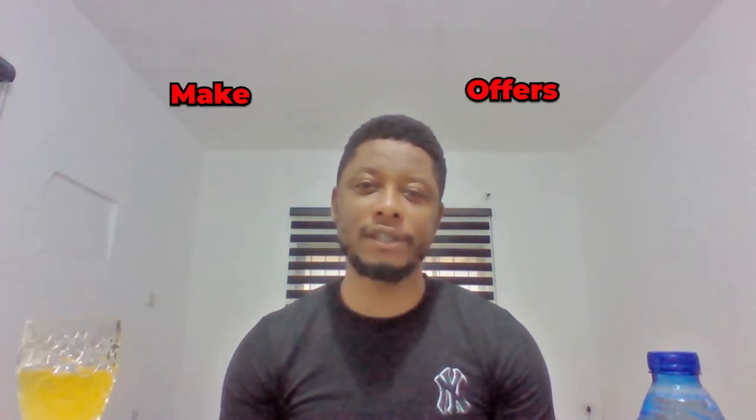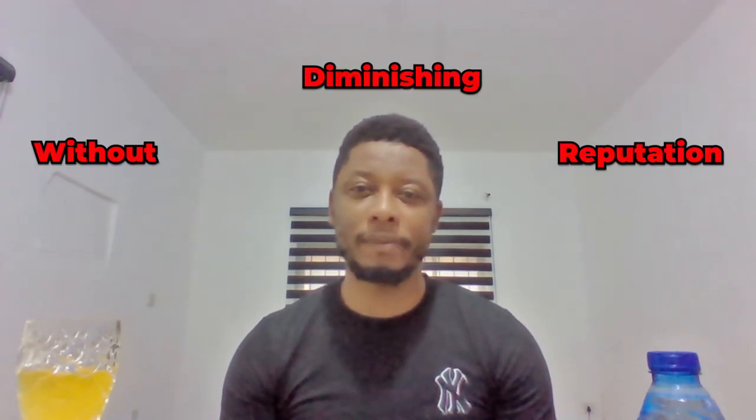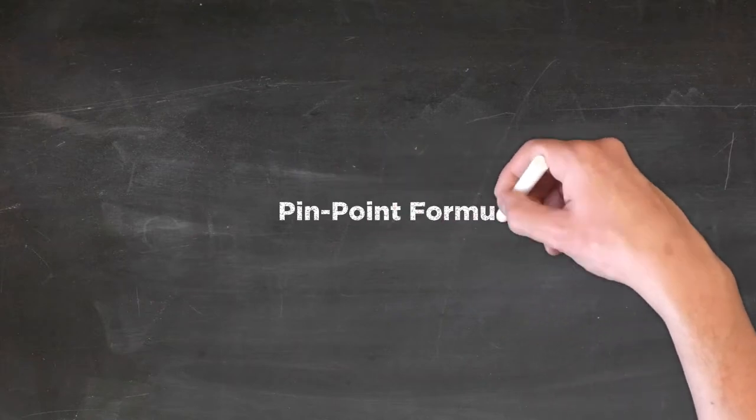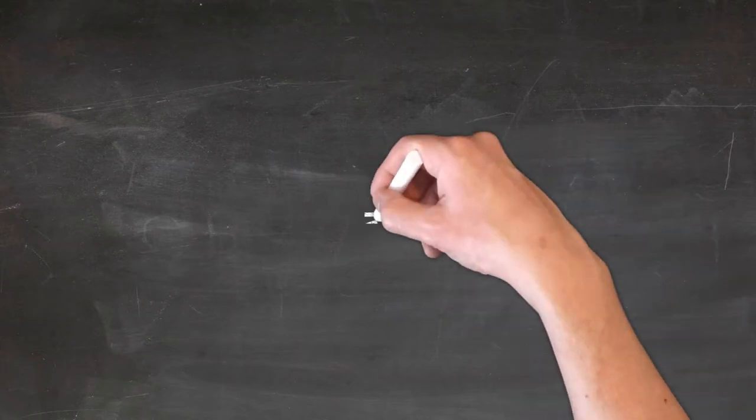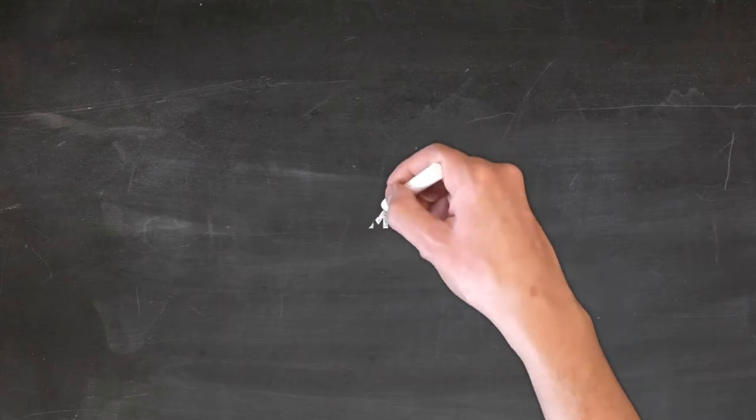The Pinpoint Formula is a formula for presenting offers to your audience in a way that dramatically improves the response you get without diminishing your reputation. The Pinpoint Formula equals ATM plus O, which equals M+, where M+ means money.